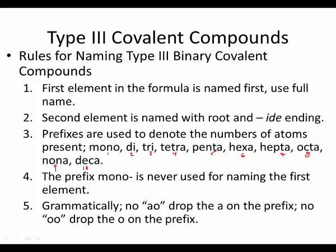There are also grammar rules revolving around vowels. Especially when 'oxide' is the second element, you don't use 'AO' or 'OO.' Drop the A or O from the prefix. So it's not 'mono-oxide' — it's 'monoxide.' Drop the O from mono. It's not 'tetra-oxide' — it's 'tetroxide.' Drop the A from tetra, penta, and hexa. So grammatically: no AO, no OO. It sounds weird to say 'pentoxide,' but you drop the A from penta. 'Di' and 'tri' are okay — it is 'dioxide,' it is 'trioxide.'